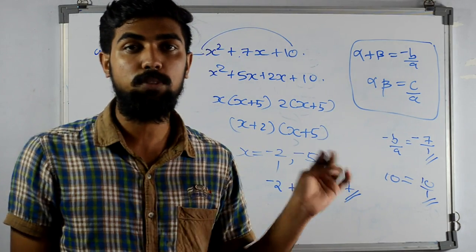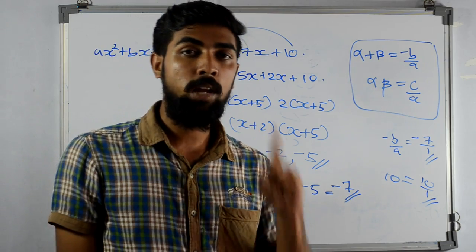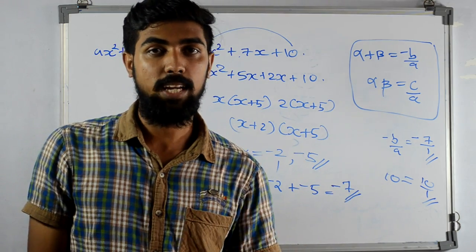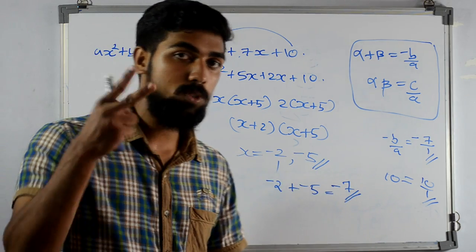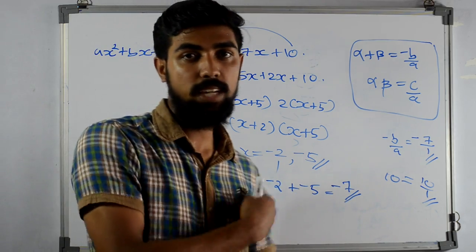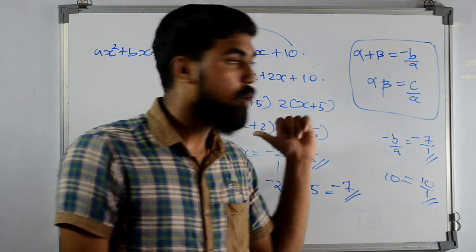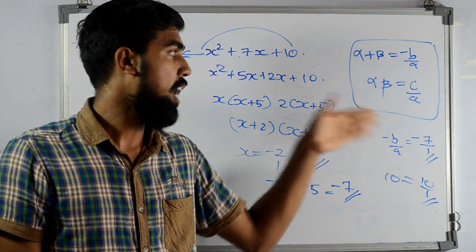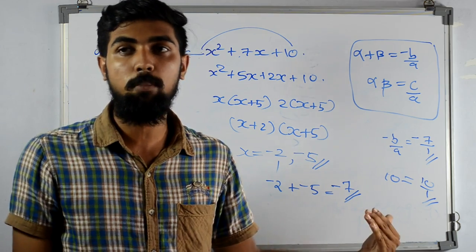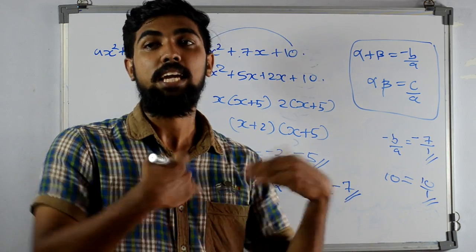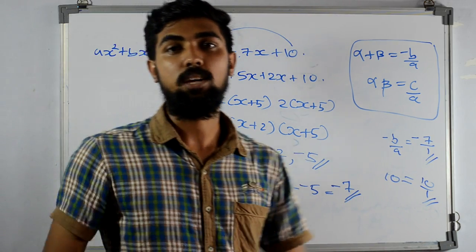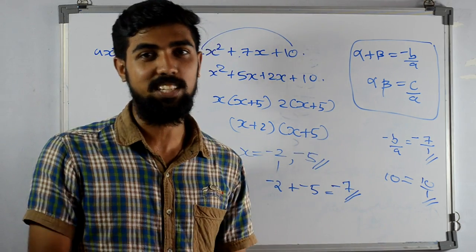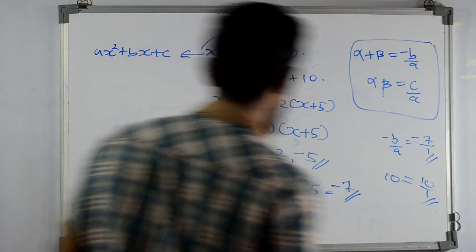We have two zeros of a quadratic polynomial. In linear polynomials, we have one value of x. In quadratic, we have two values. If we have three degrees, we have three zeros. If we have four degrees, we have four zeros. This means at most two zeros can be obtained from a quadratic equation.